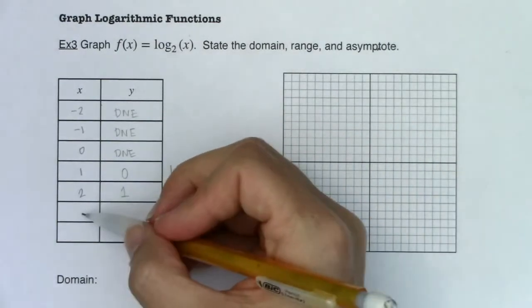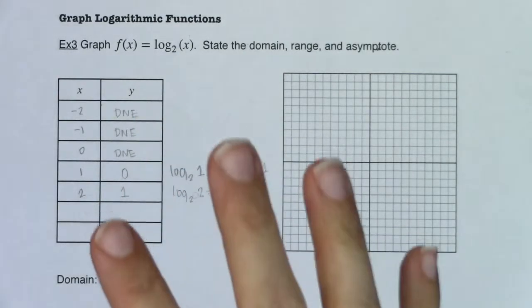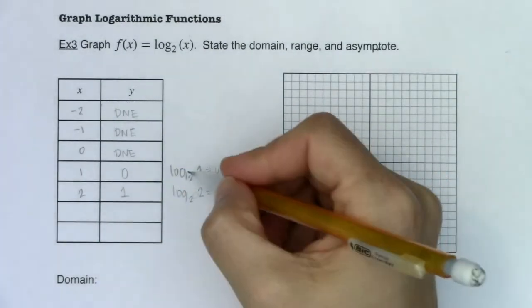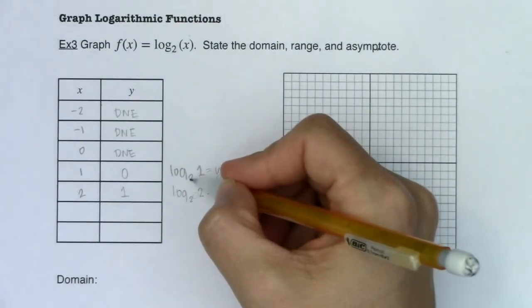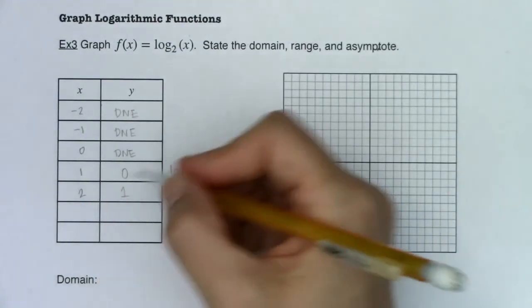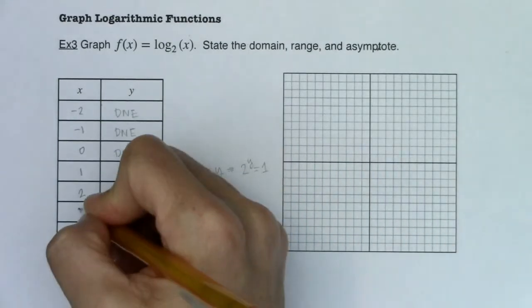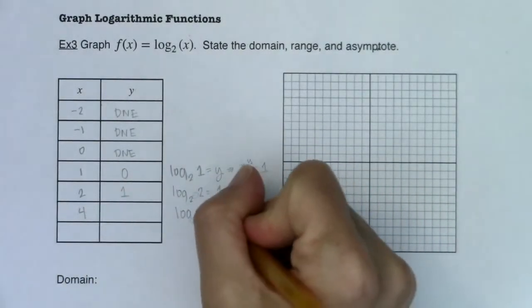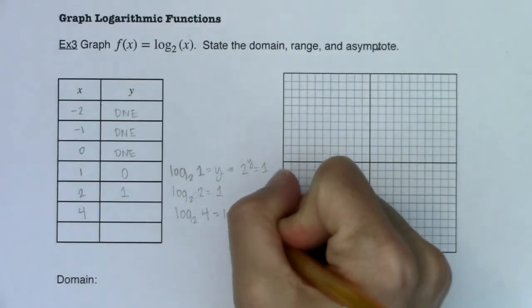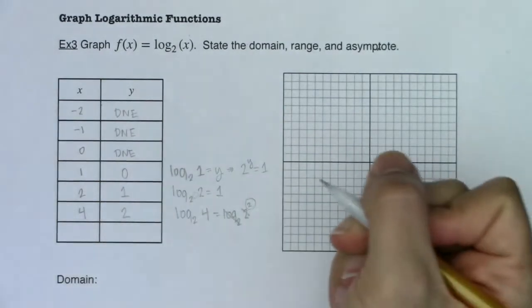So I think we want to get a couple more x coordinates, but instead of just picking three and four, let's think about what would be easiest to pick. If the base of your logarithm is two, it would be beneficial to pick powers of base two. So let's think about this. If I wanted log base 2 of 4, for example, why would I pick four? Because four is like saying 2 squared. And whenever the base of your logarithm and the base of your power are the same, the only thing that survives is your exponent.